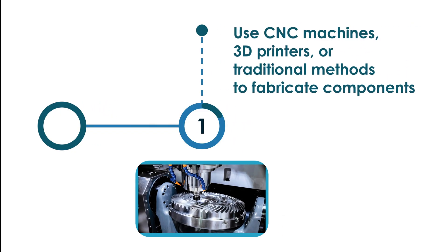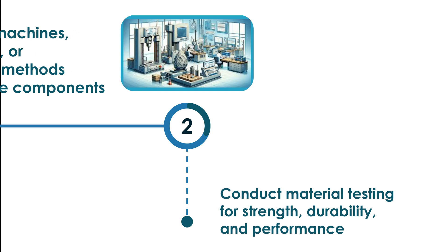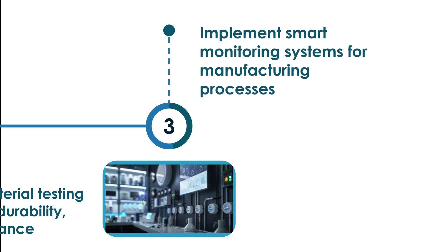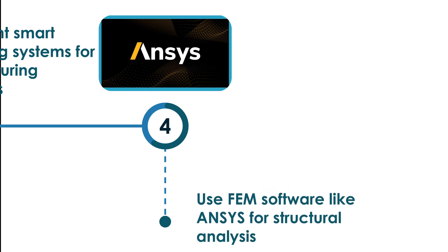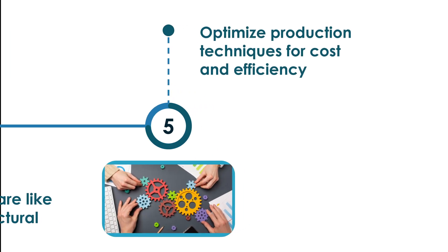For prototype development, use CNC machines, 3D printers or traditional methods to fabricate components. Conduct material testing for strength, durability and performance. Implement smart monitoring systems for manufacturing processes. Use FEM software like ANSYS for structural analysis. Optimize production techniques for cost and efficiency.